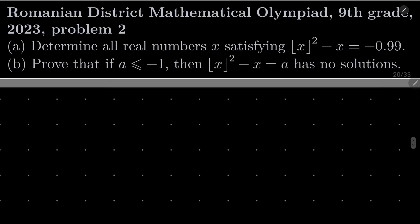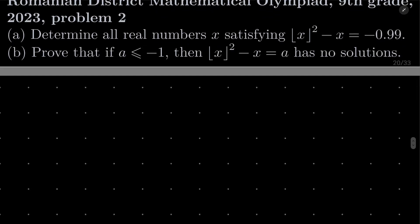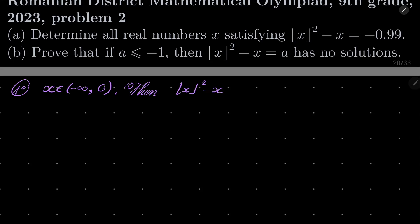Here is my attempt. As I suggested, I will consider five cases. Case number one: x is between minus infinity and 0. Notice that floor of x squared minus x — every square is non-negative and minus some negative number — this is of course positive. So our equation has no solution in this case.